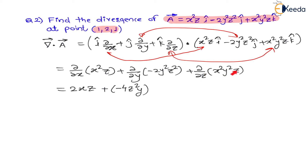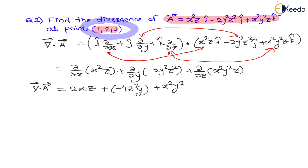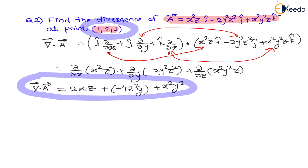For z, only z is variable and x² and y² are constants. The derivative of z is 1, so the result is x²y². This gives the divergence expression as 2xz minus 4yz² plus x²y². Now they have given the point, so let us substitute these values into this expression.